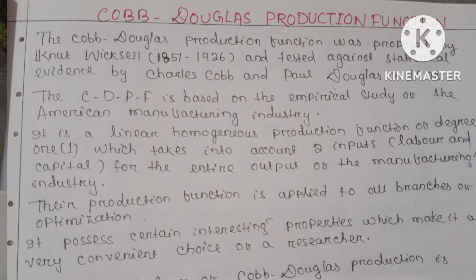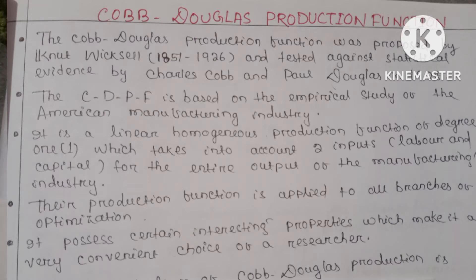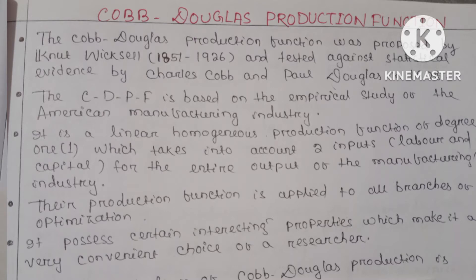The Cobb-Douglas production function was proposed and tested against statistical evidence by Charles Cobb and Paul Douglas in the year 1928. It is based on the empirical study of the American manufacturing industry, and it is a linear homogeneous production function of degree 1, which takes into account two inputs — labor and capital — for the entire output of the manufacturing industry. This production function is applied to all branches of optimization, and it possesses certain interesting properties which make it a very convenient choice for a researcher.